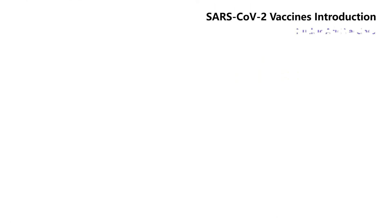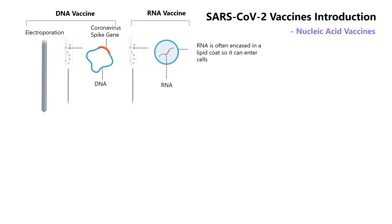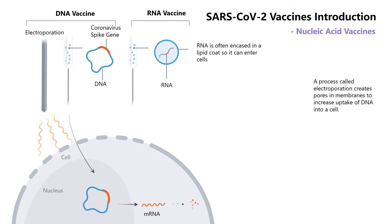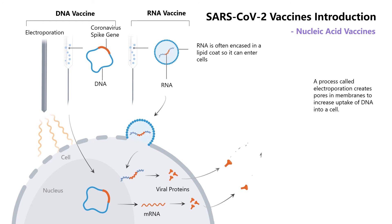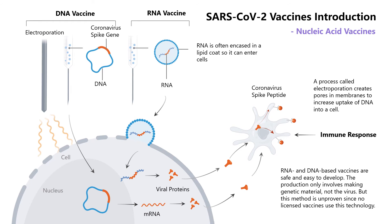Nucleic acid vaccines include DNA vaccines and RNA vaccines. Nucleic acid vaccine, also known as genetic vaccine, refers to a plasmid vector containing the encoded protein gene sequence. It is introduced into the host by intramuscular injection or microprojectile bombardment, and the host cell expresses the antigen protein to induce an immune response to the antigen protein.